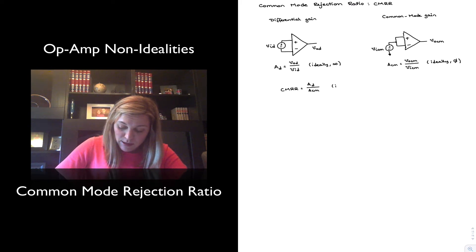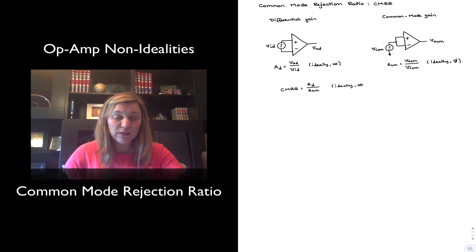Now the CEMRR ideally is infinite, since AD ideally is infinity and ACM ideally is zero. Practically, for a 740 op-amp, for example, it is around 90 dBs.